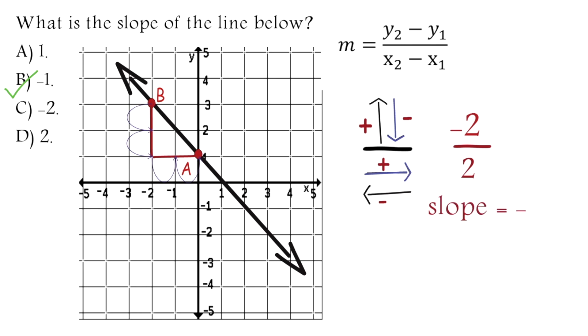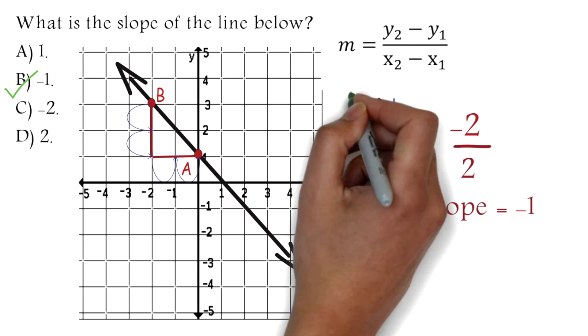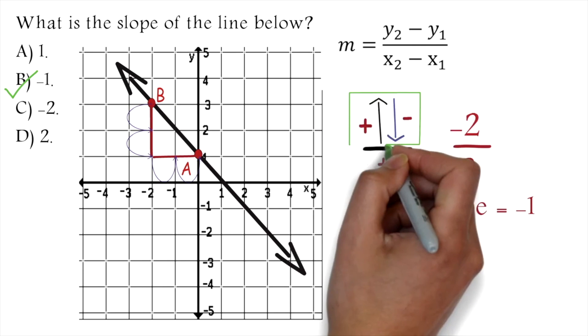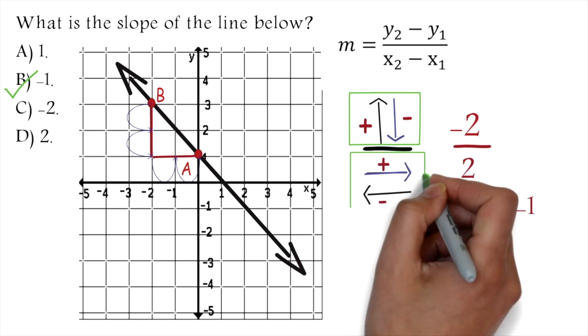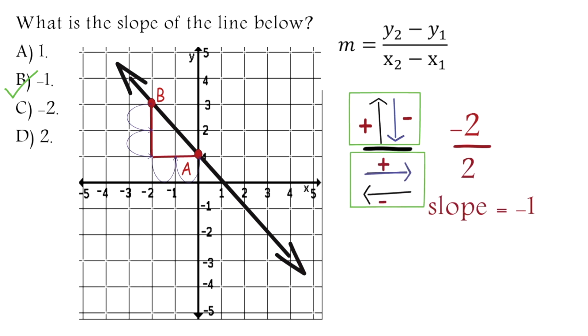So our slope is -1. Notice that our first movement is always change in y. That is moving up or down. Then our second movement is change in x. That is moving left or right. There are other ways we could have moved to get the same results. Check our other GED videos for more.